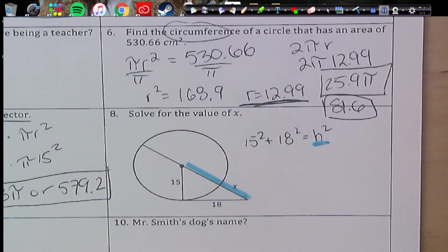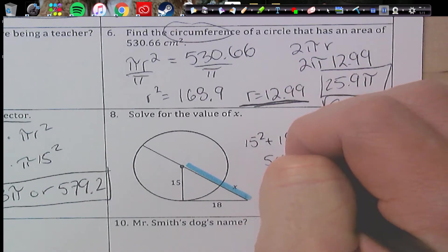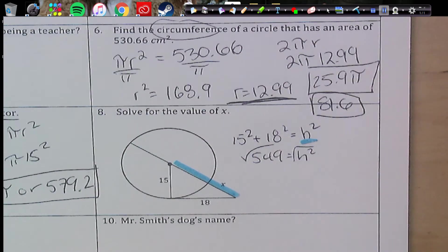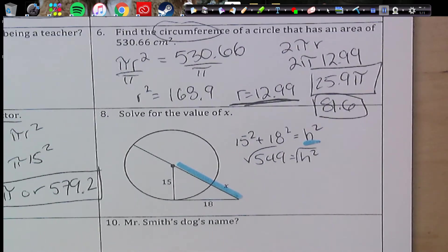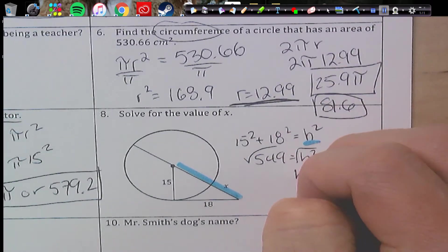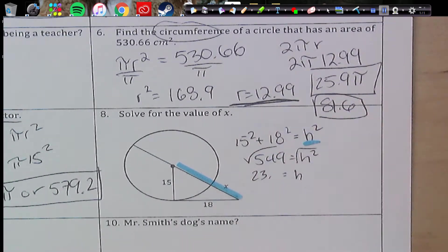And if we do 15 squared plus 18 squared, we're going to get 549. Take the square root. And we are going to get about h equals about 23.4.